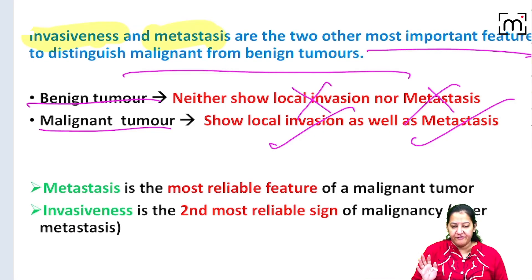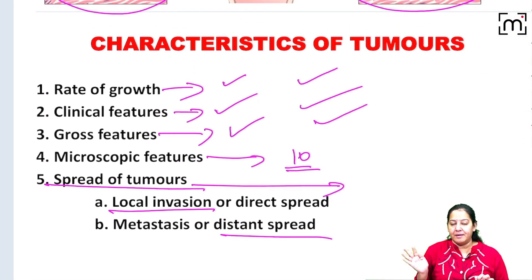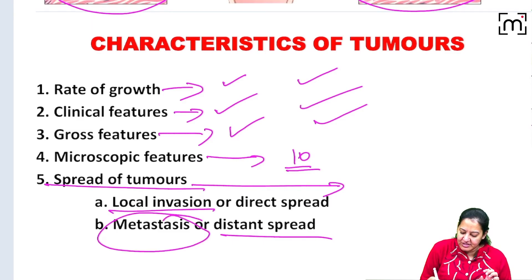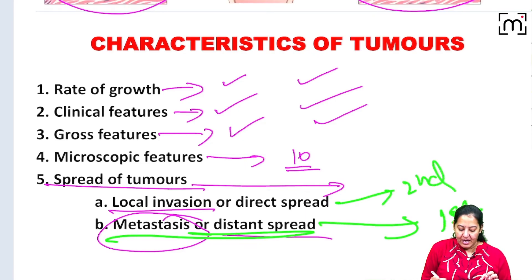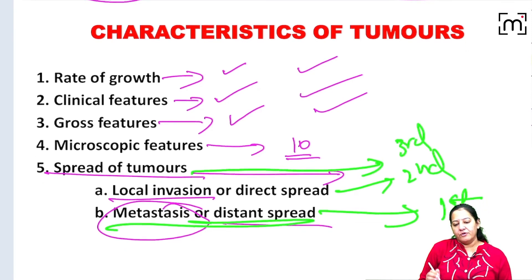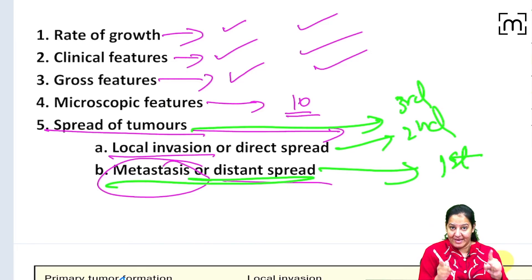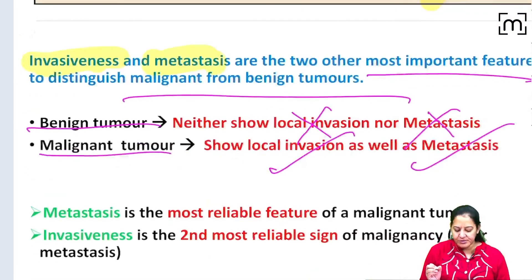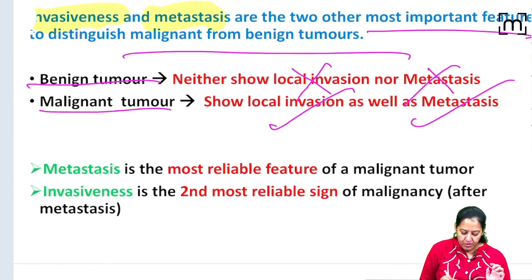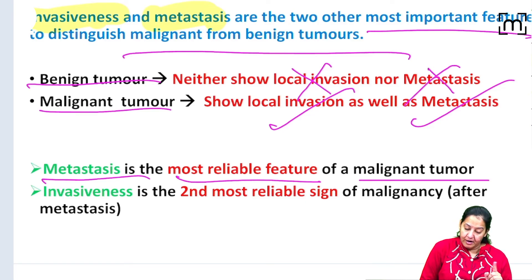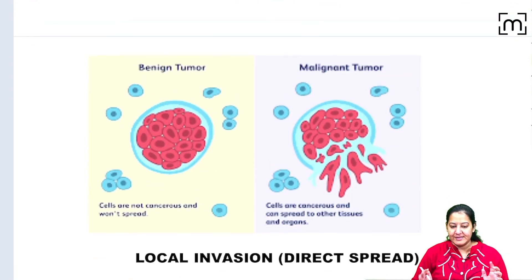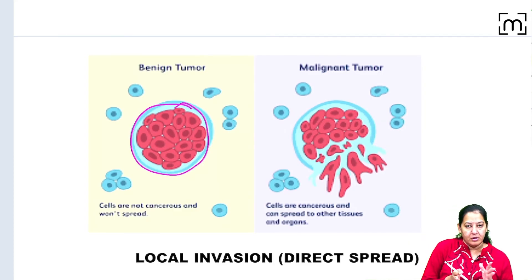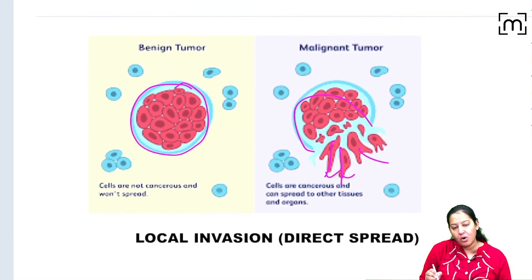Out of the five features used to distinguish benign and malignant tumours, the most reliable is metastasis — it is the most characteristic finding. The second most reliable is local invasion, and the third is anaplasia. So if you want to distinguish benign from malignant, metastasis is the most reliable criterion, invasiveness is the second most reliable sign.